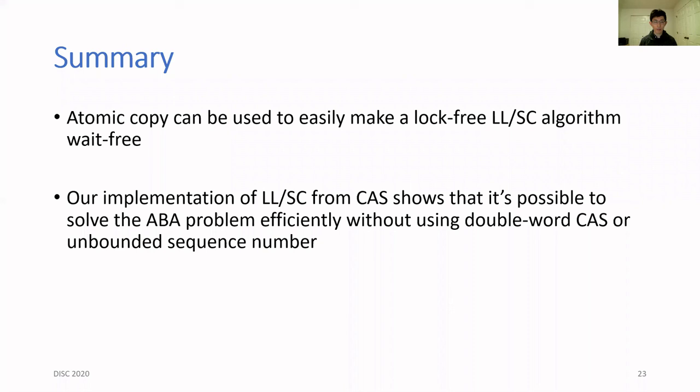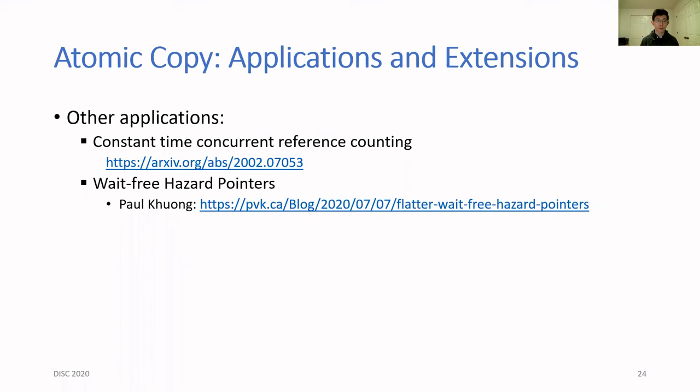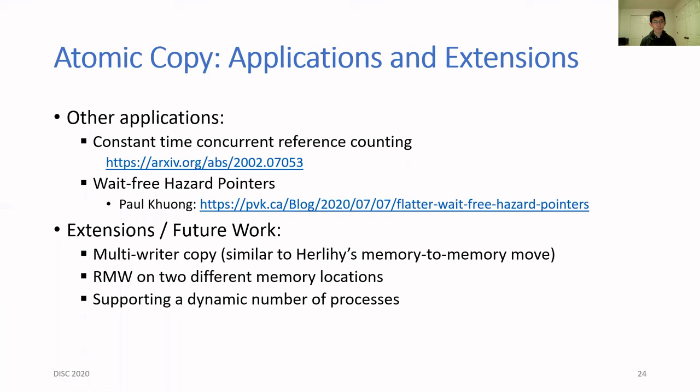In summary, we've shown that atomic copy can be used to easily make a lock-free LL/SC algorithm wait-free. The resulting wait-free algorithm shows that it's possible to solve the ABA problem efficiently without using double-word CAS or unbounded sequence numbers. In a separate paper, we used atomic copy to implement concurrent reference counting, and we actually performed some experiments and showed that atomic copy can be practical as well. Also, Paul Khuong wrote an interesting blog post on how to engineer fast wait-free hazard pointers, and some of his implementations were based on variations of atomic copy.